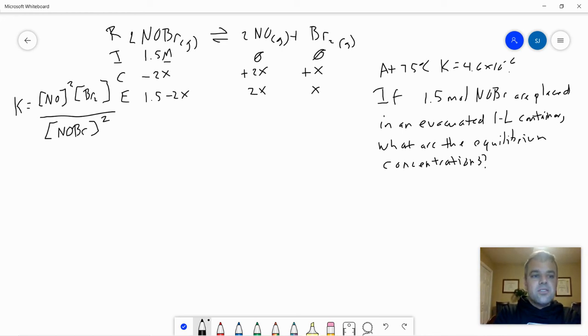Now, all we need to do is plug all these numbers into our equilibrium expression and solve. It's easy peasy, right? So for nitrogen monoxide, that's 2. So K equals, well, nitrogen monoxide is 2X squared. And NOBR is 1.5 minus 2X squared. And that all equals 4.6 times 10 to the minus sixth. Now, you might be looking at this and saying, holy cow, this is going to be a mess to solve. Because 2X squared, that's going to be 4X squared times X. That's 4X cubed. And then we've got to factor this thing on the bottom. We're going to need to use some complicated algebra.